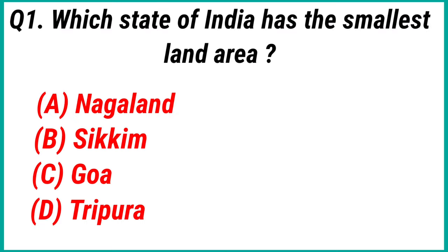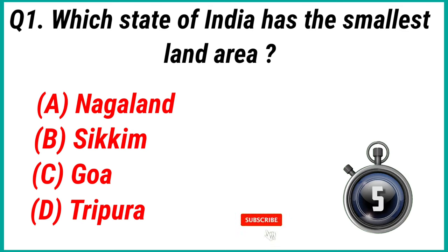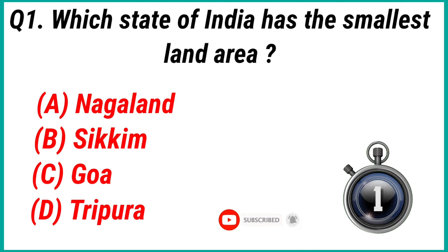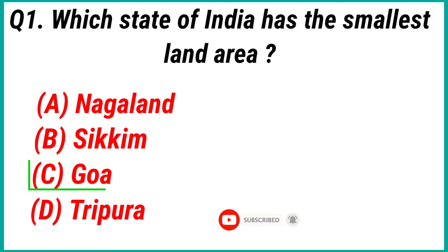Question 1: Which state of India has the smallest land area? Answer option C: Goa.